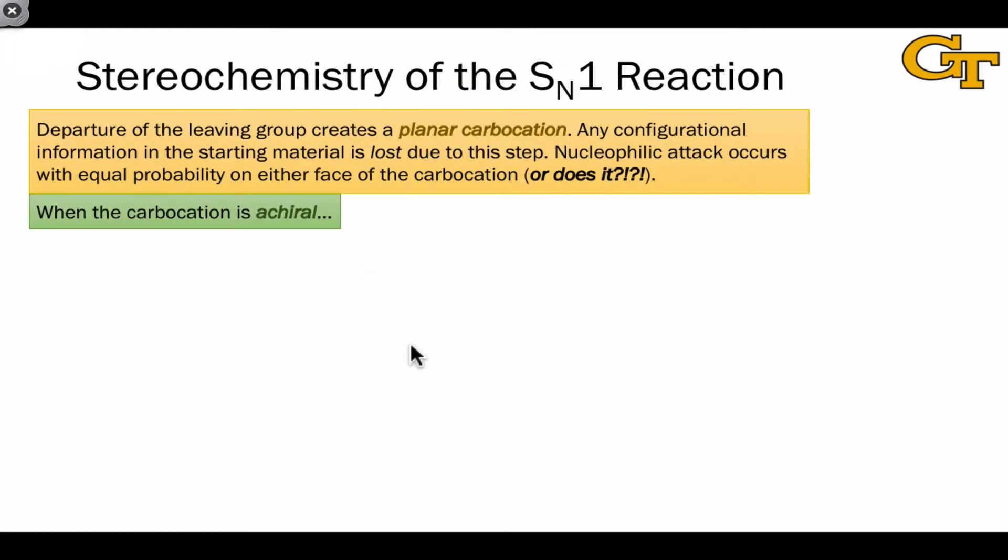The stereochemistry of the SN1 reaction is interesting because departure of the leaving group creates a planar carbocation. This means that configurational information, meaning, for example, an R or S label, is completely lost in the first step of SN1.